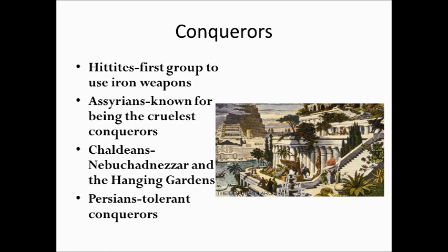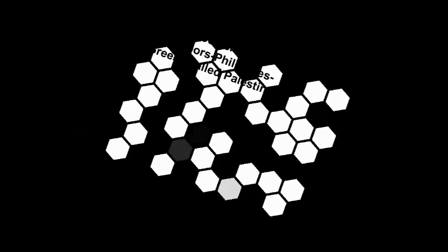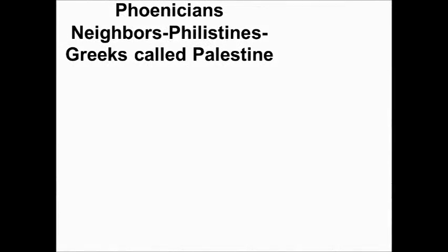The last group of conquerors are the Persians, and they were known for being tolerant conquerors. We're not going to discuss them too much because they play a much bigger role in the next unit. That brings us up to one of our really important groups for this region — the Phoenicians.